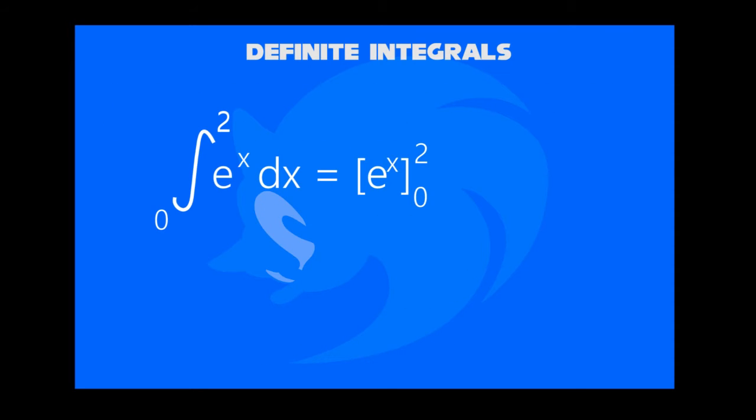This definite integral is e to the exponent x dx from 0 to 2. e to the exponent x does not affect but we can substitute x by the way. We know e is equal to 2.72, its square is approximately 7.4, and if the exponent is 0, the value is 1.